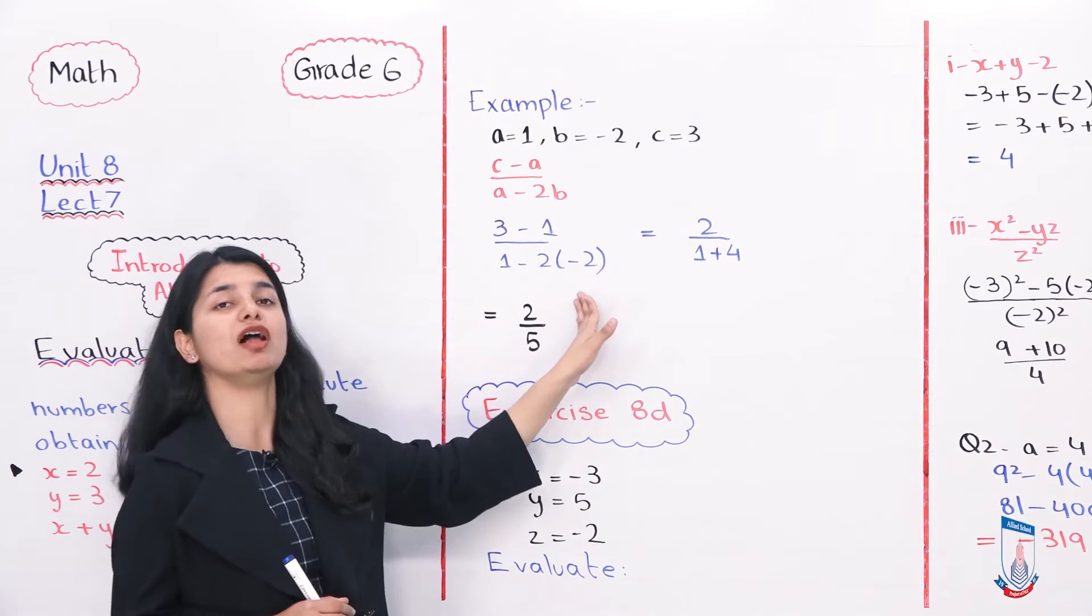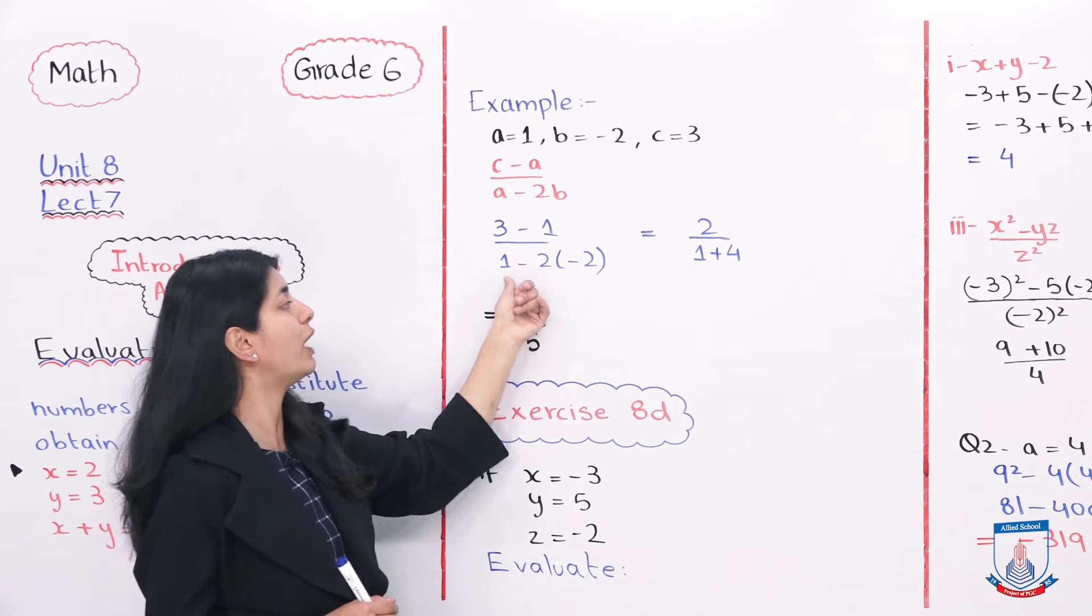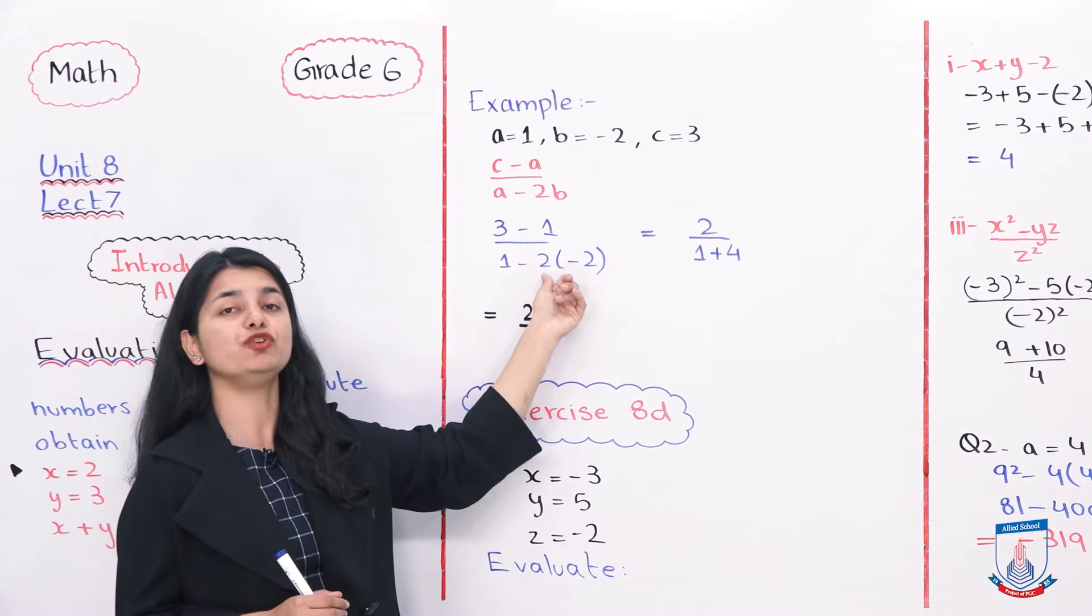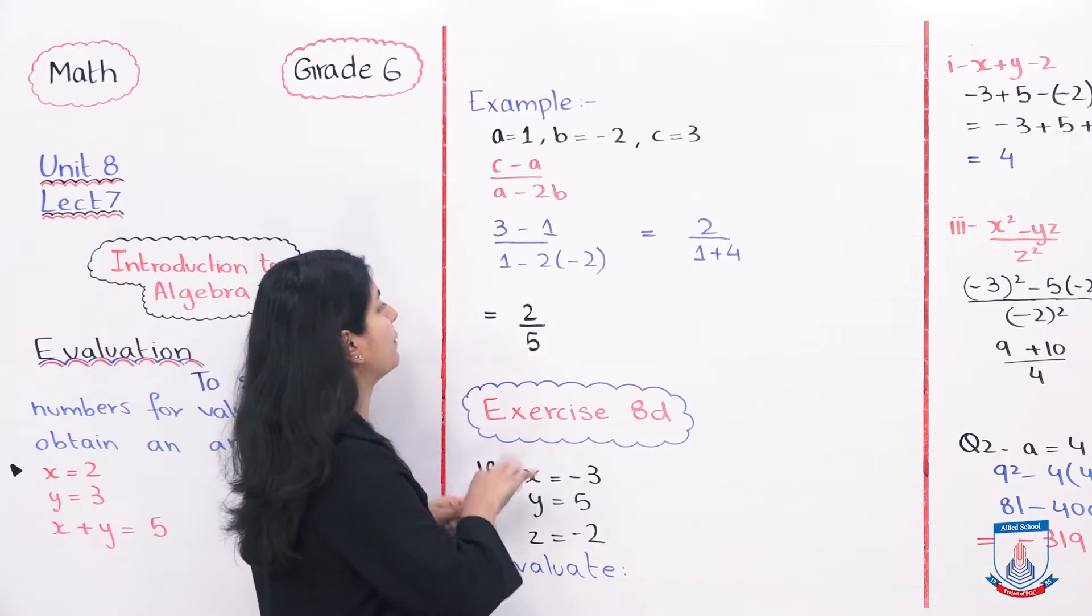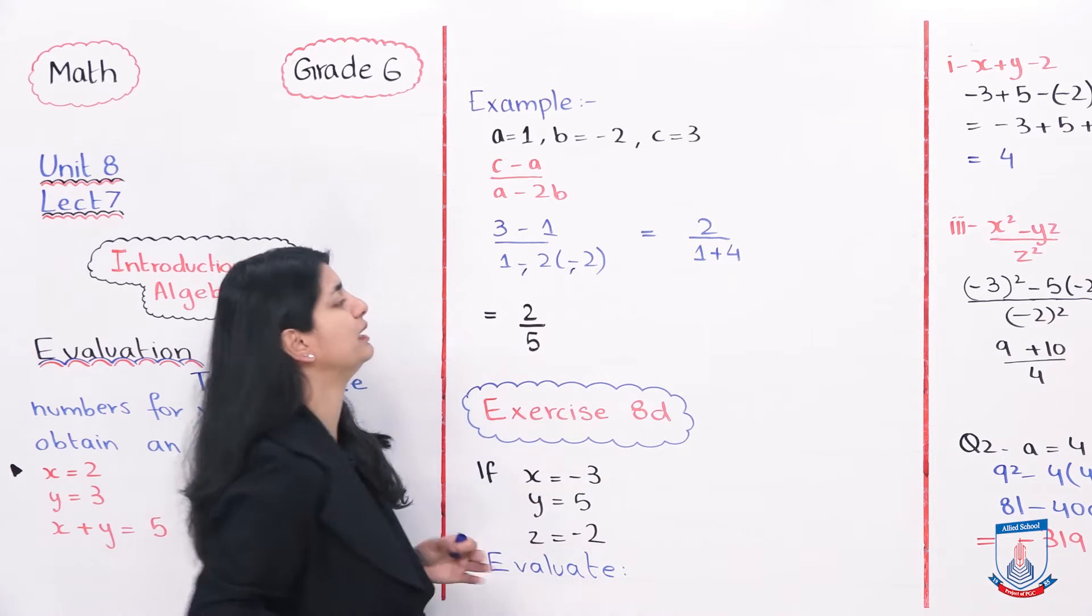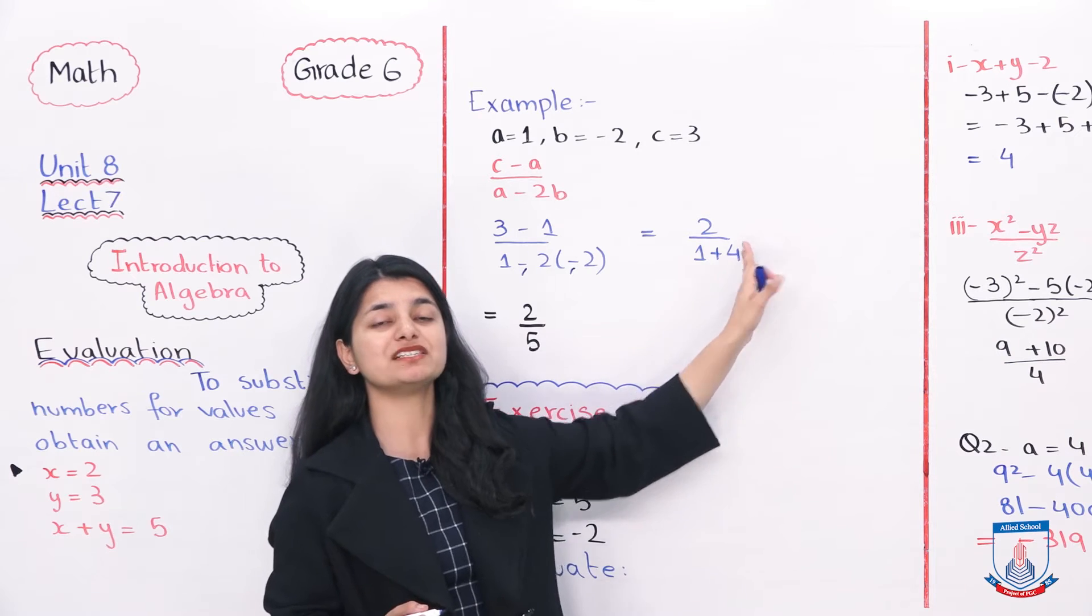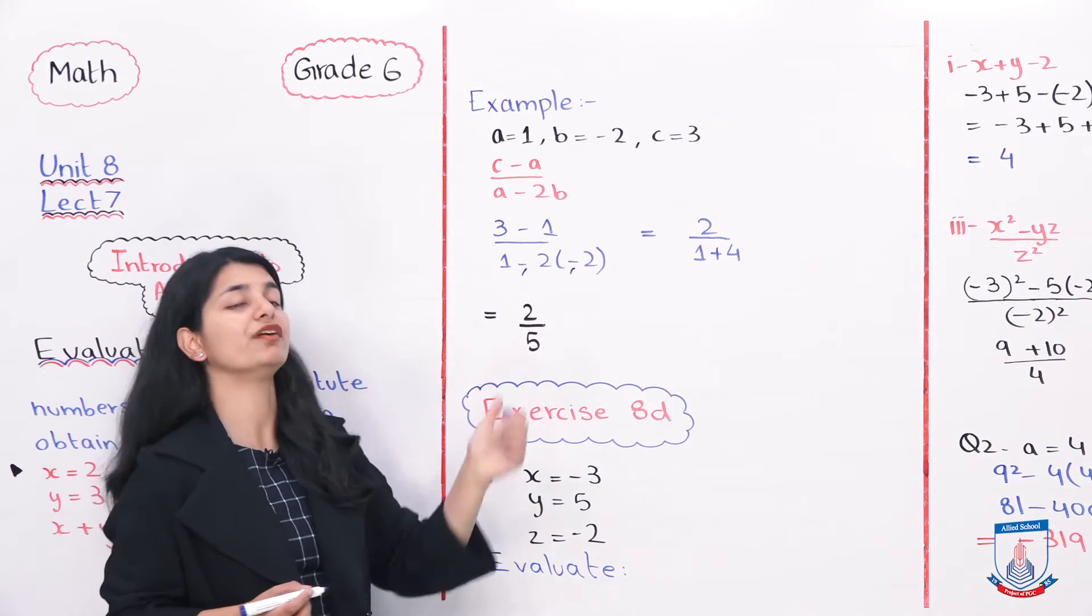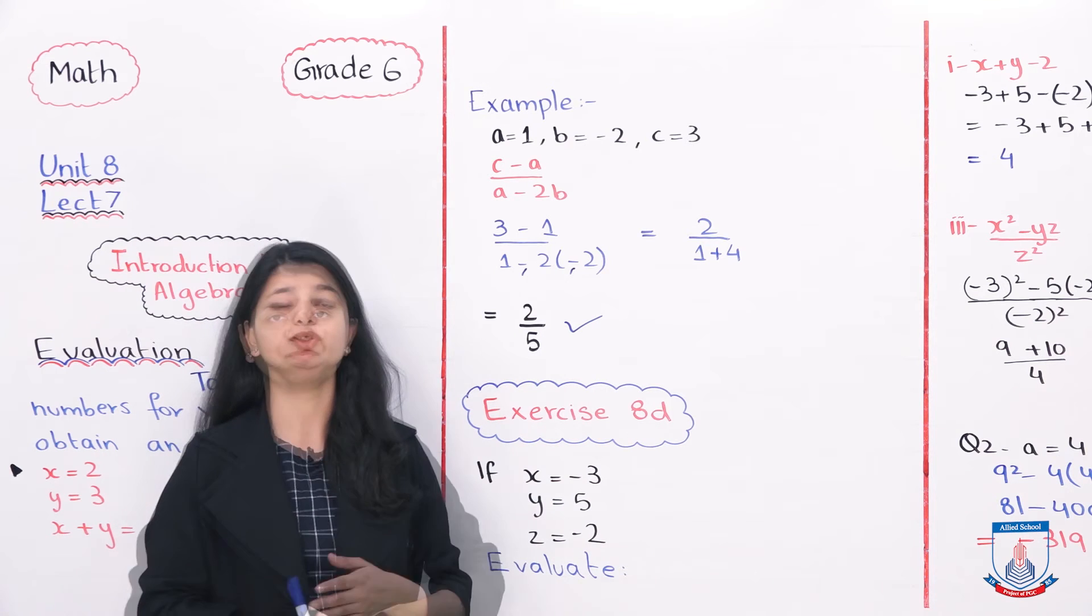Now you solve it. 3 minus 1 is 2. 1 minus 2 into minus 2. First solve the brackets - 2 into 2 is 4, or minus times minus becomes plus, so 1 plus 4. So your answer is 2 over 5, and this is your evaluated answer.